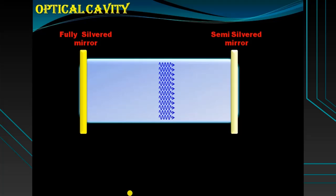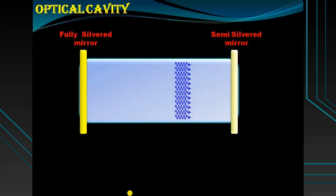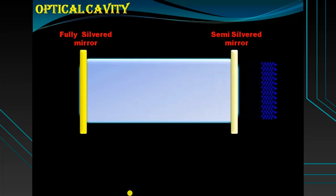When the beam is sufficiently intense, it comes out through the optical window. The multiple reflections also make the stimulated emission more coherent, hence the optical cavity is able to convert the active medium into a light generator.